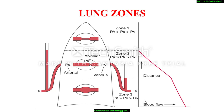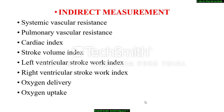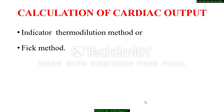Direct measurements that can be obtained from an accurately placed pulmonary artery catheter include central venous pressure, right-sided intracardiac pressure, pulmonary artery pressure, pulmonary artery occlusion pressure (also called pulmonary capillary wedge pressure or pulmonary artery wedge pressure), cardiac output, and mixed venous oxygen saturation. The pulmonary artery catheter can also indirectly measure the following parameters: systemic vascular resistance, pulmonary vascular resistance, cardiac index, stroke volume index, left ventricular stroke work index, right ventricular stroke work index, oxygen delivery, and oxygen uptake.